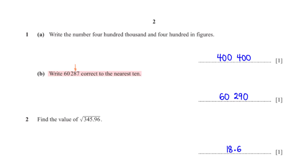Write sixty thousand two hundred and eighty-seven correct to the nearest ten. The number in the tens position is eight. The number after eight, which is seven, is greater than five, so we add one to eight giving us nine, and the digit after eight becomes zero. So we have sixty thousand two hundred and ninety.